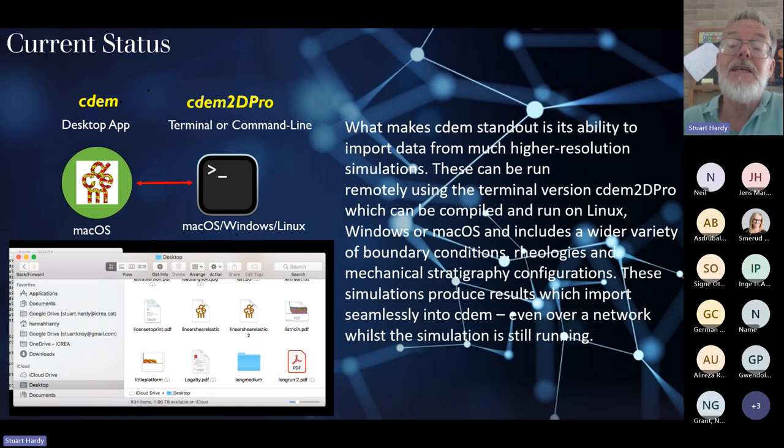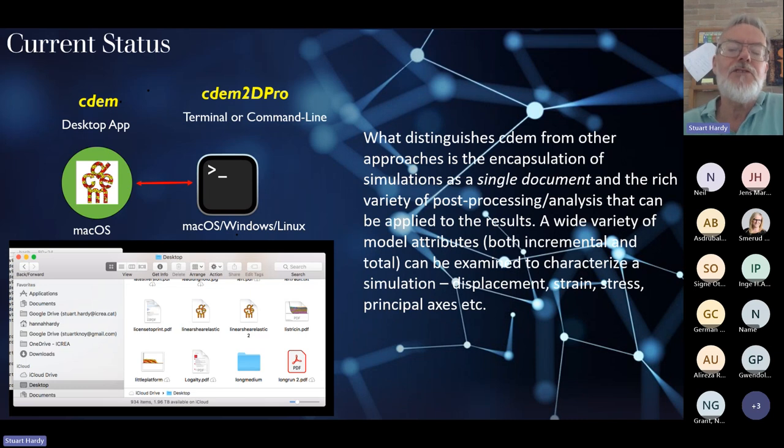It can be run essentially headless from a terminal or command line on Mac, Windows or Linux. At the moment, the desktop app, which is in green here like a traffic light, is the one that we have. It's fully functional up and running. Windows is in process. Our desktop app can condition what we do in our more complicated, more computationally demanding model, but the results of this are post-processed and analyzed on the desktop.